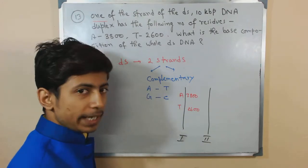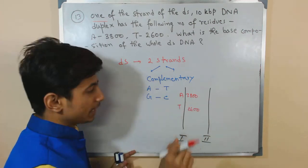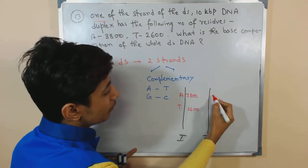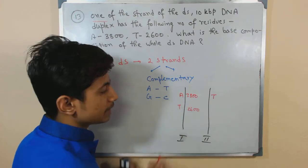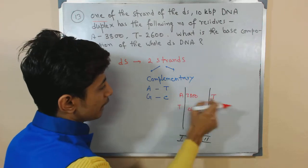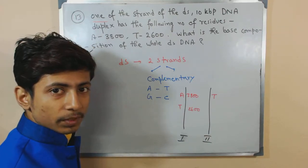From that, we understand: if in this strand adenine is 3800, then in the complementary strand, the value for thymine will be the same, 3800, because adenine always pairs with thymine.